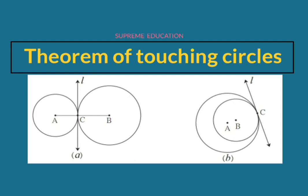If two circles in the same plane intersect with a line in that same plane in only one point, they are said to be touching circles and that line is their common tangent. Here also, these two circles intersect with a line in only one point in common, therefore these two circles are also touching circles and this line is their common tangent.